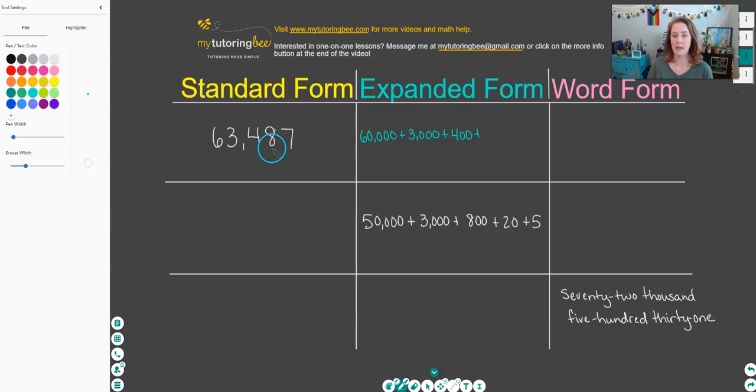Then we move on to the eight. The eight is in the tens place, so it's worth 80. For our last digit, number seven, the seven is in the ones place, so we just need to add on seven ones. So there we have 63,487 in expanded form.